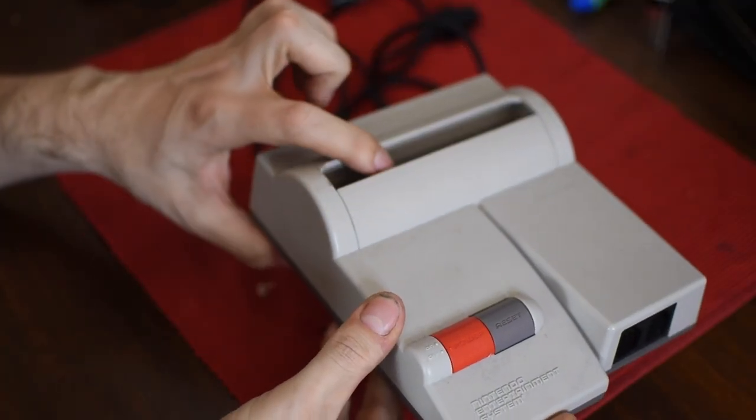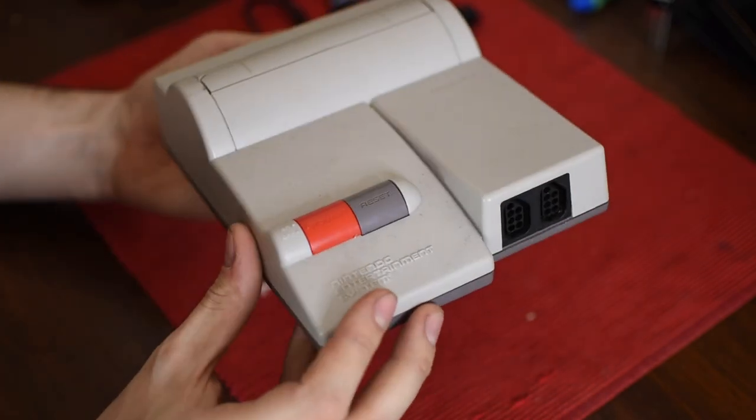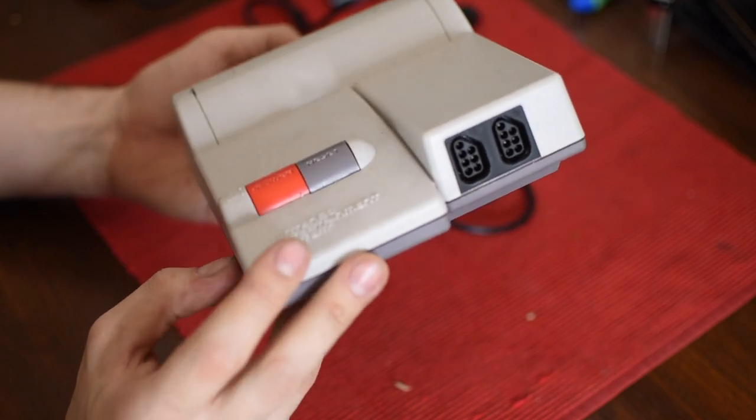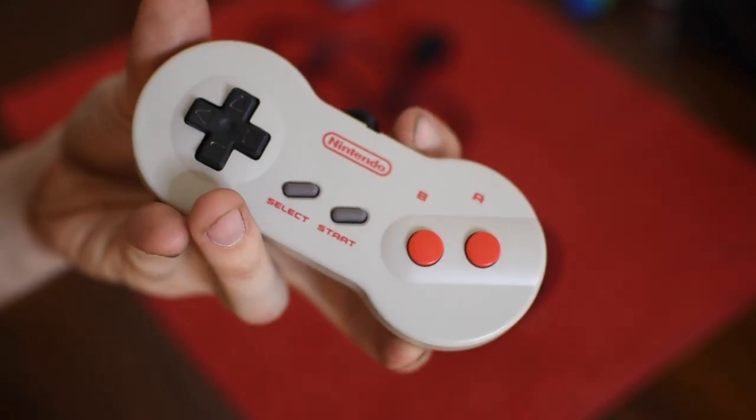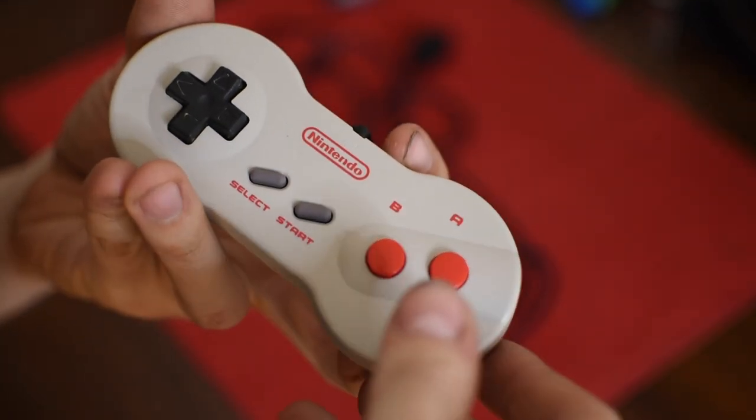In some ways it's better than the original, in some ways it's worse. The top loader also came with its very own special controller which is called the dog bone. And much like how the top loader itself looks a lot like the Super Nintendo, well the dog bone looks a lot like a Super Nintendo controller. And honestly, I love the dog bone controller.